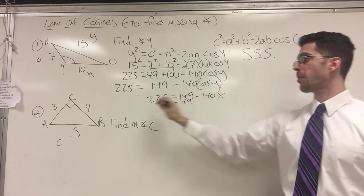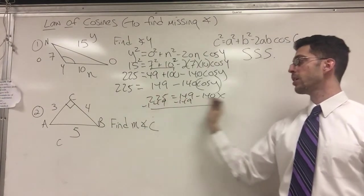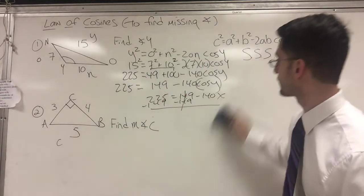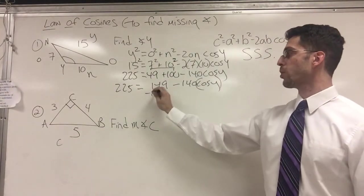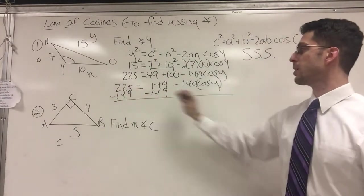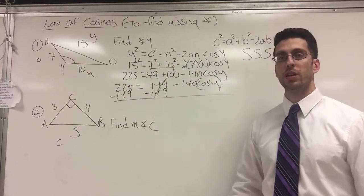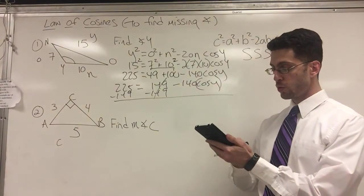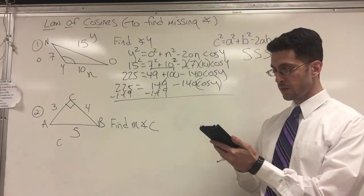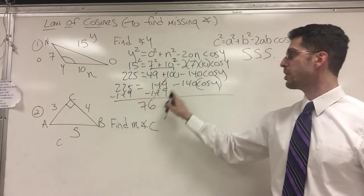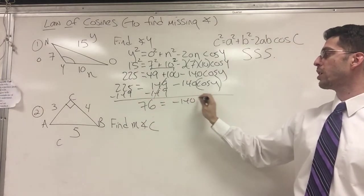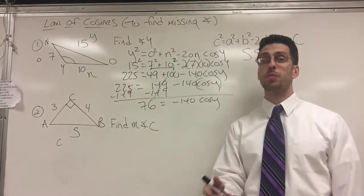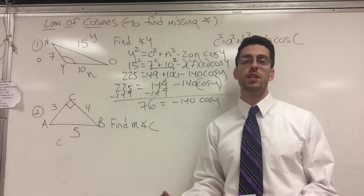How would you get X alone? I would subtract my whole number, my constant, bring it over there. And then when I bring this down, I would divide by the coefficient. So that's what I'm going to do here. So I'm going to subtract 149 on both sides. And let's see, 225 minus 149 is 76.